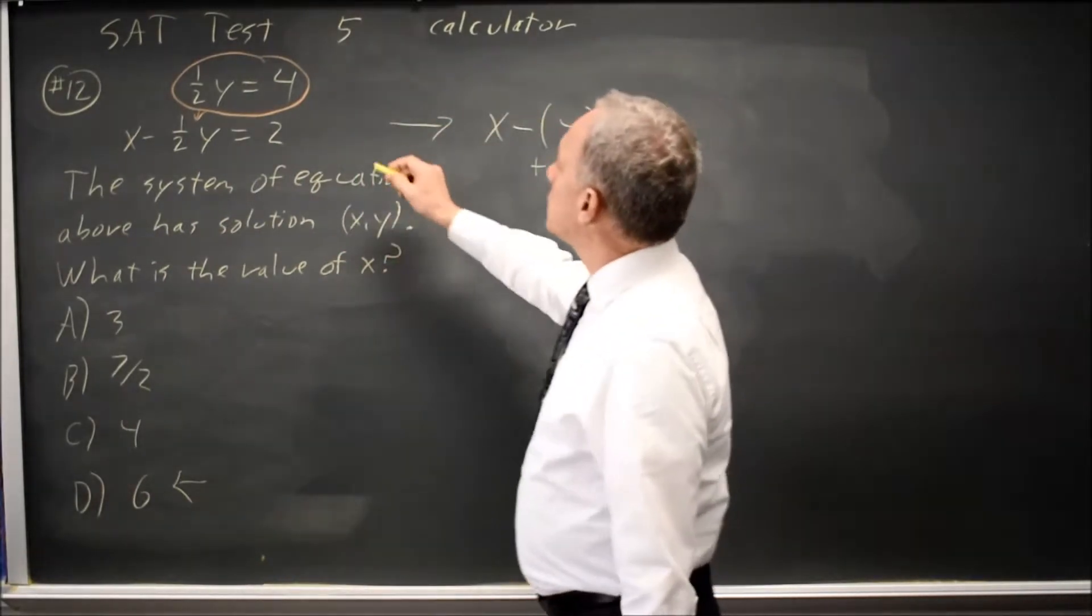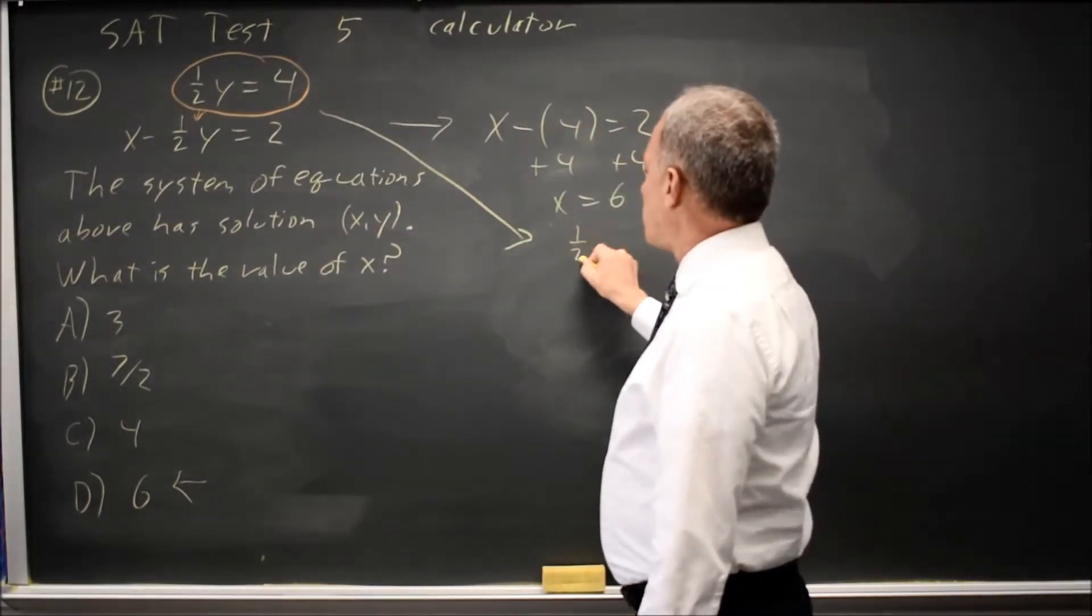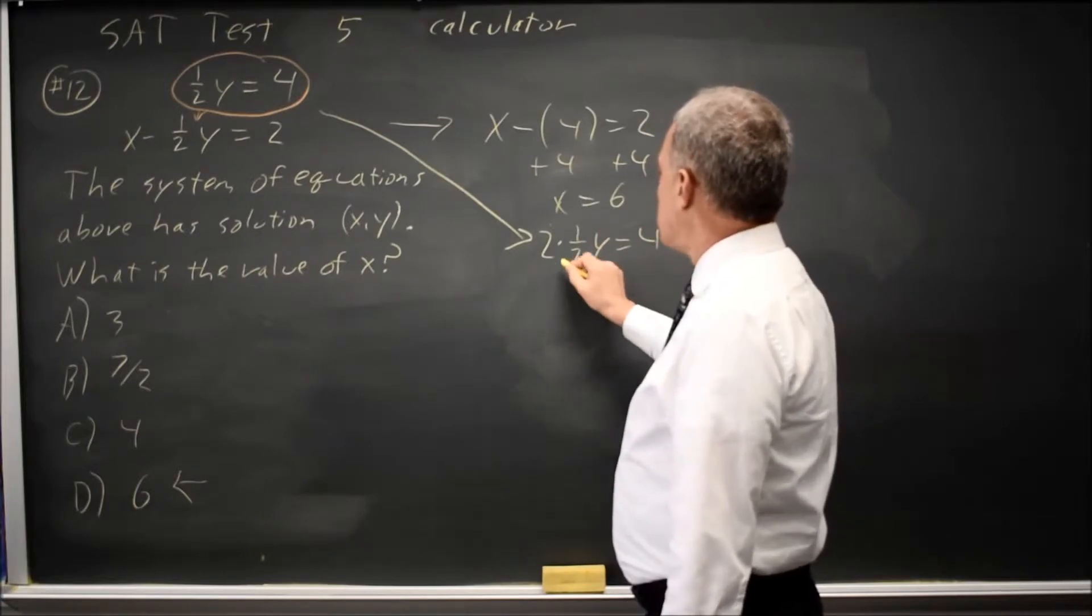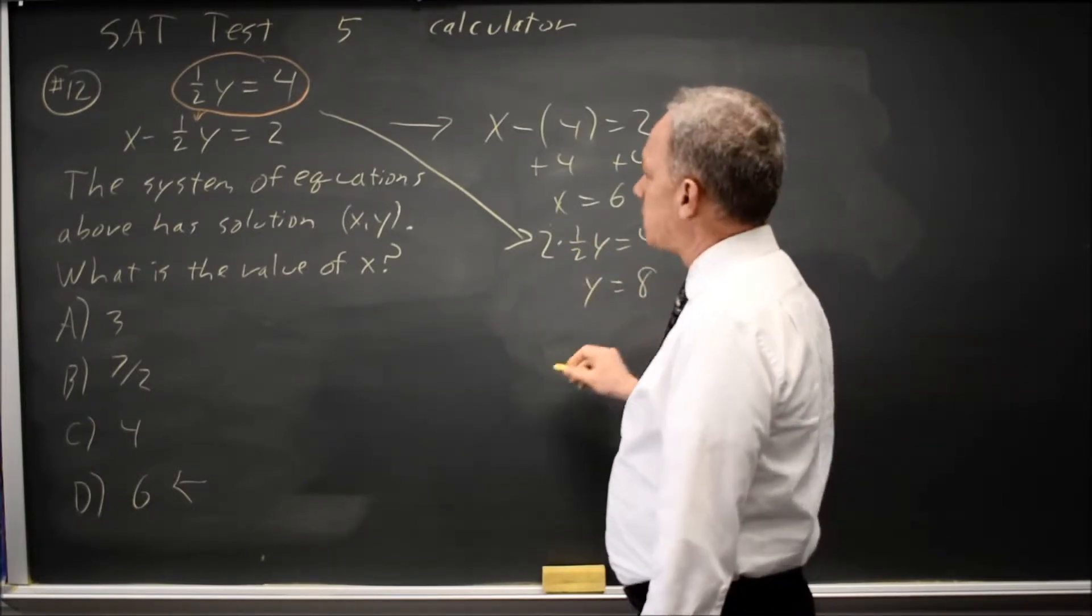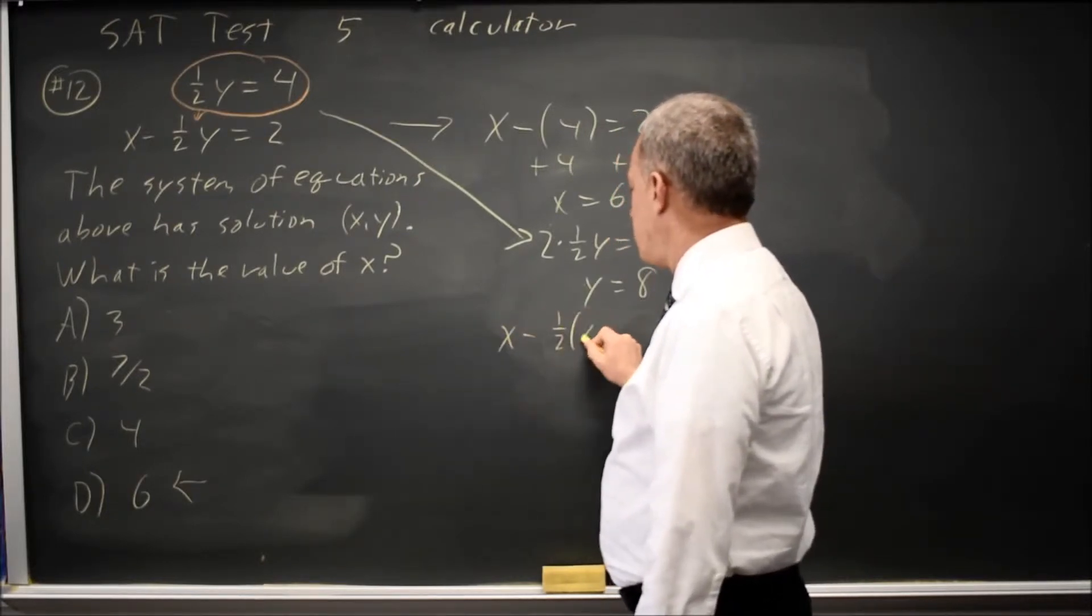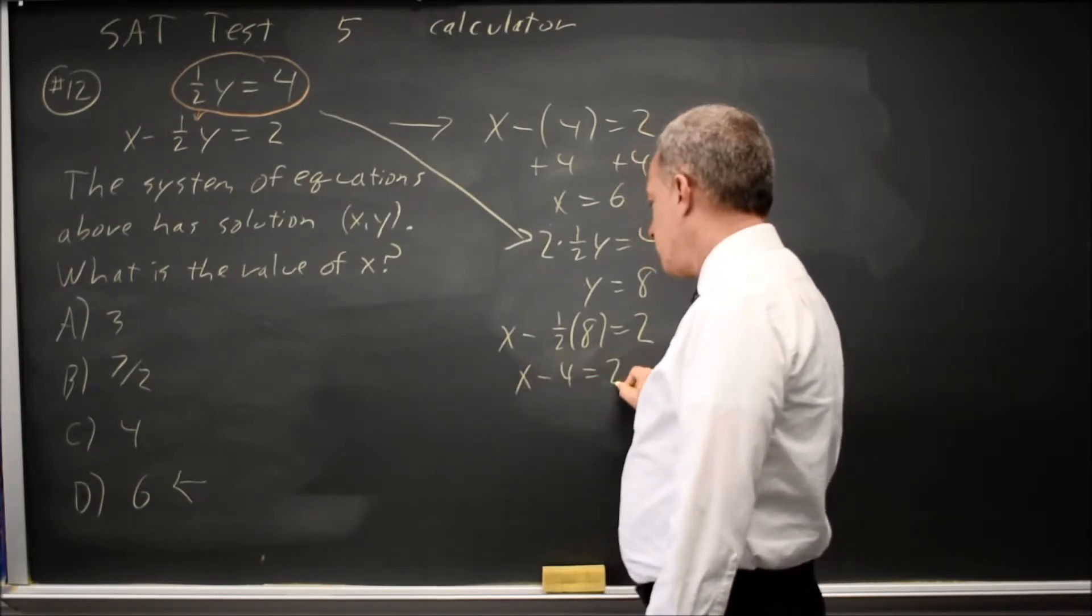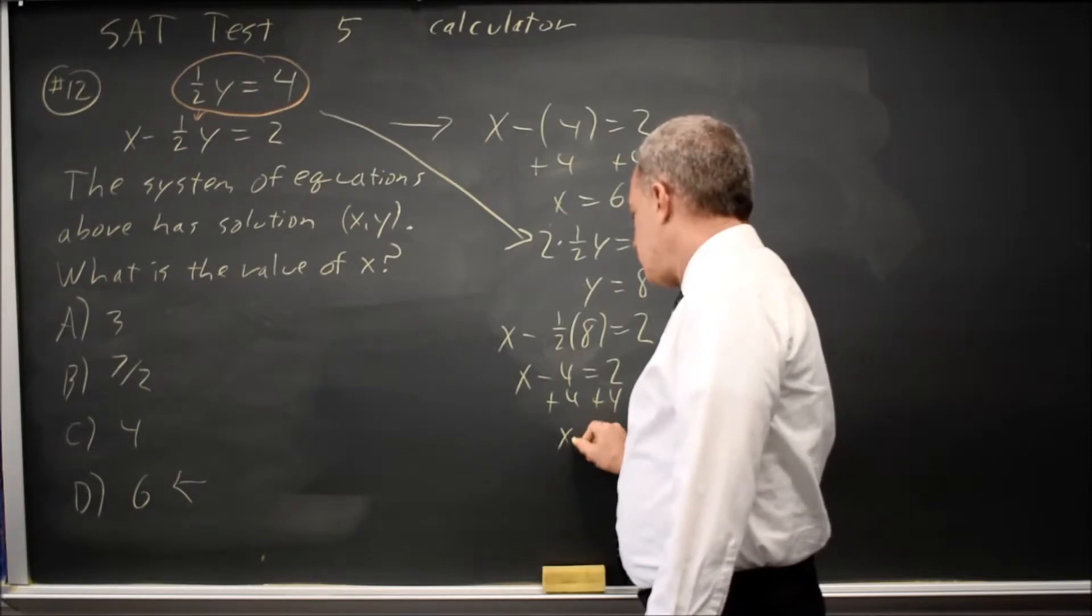Alternatively, I could solve for y. 1 half y equals 4, multiply both sides by 2, twice 1 half is 1, so 1 y equals 4 times 2 is 8. Substitute that into the second equation, x minus 1 half of 8 equals 2, so that's x minus 4 equals 2, and again, when I add 4, I get x equals 6.